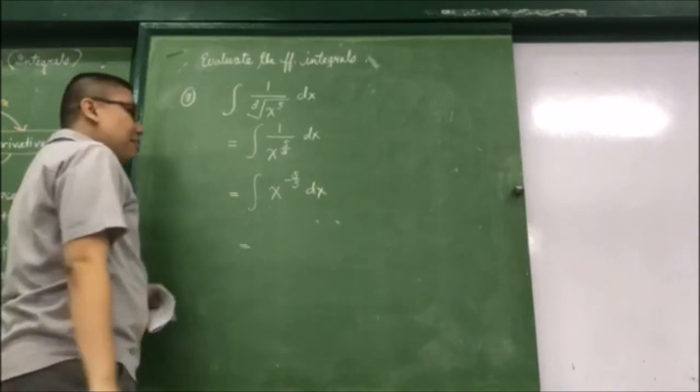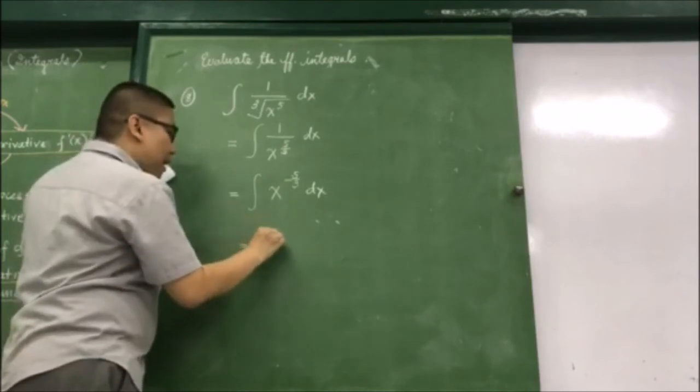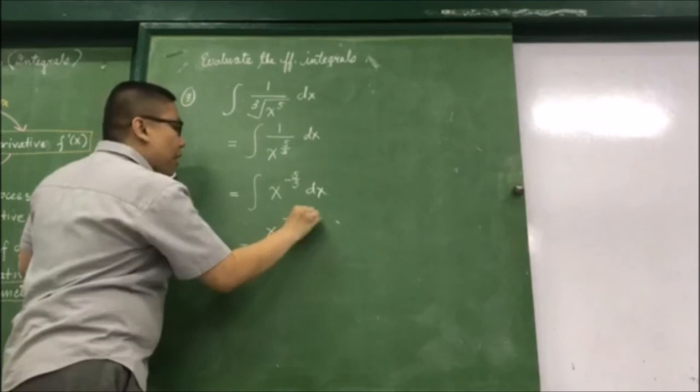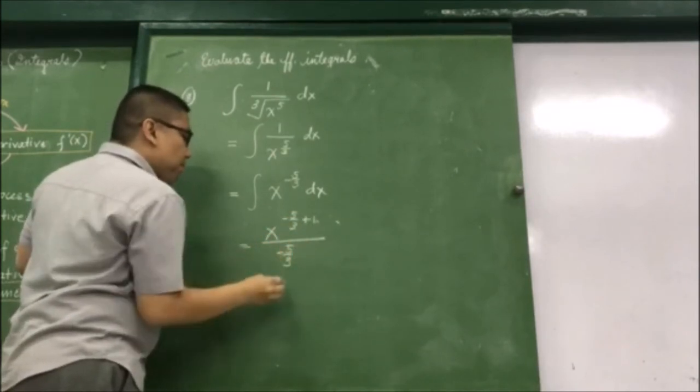Let us now evaluate this since we have a direct formula for this. Here we have x raised to negative 5 thirds plus 1 over negative 5 thirds plus 1.